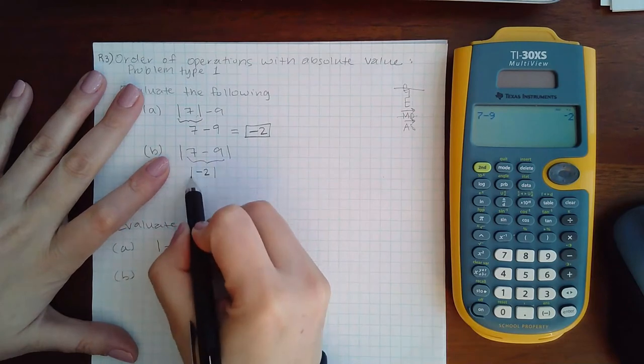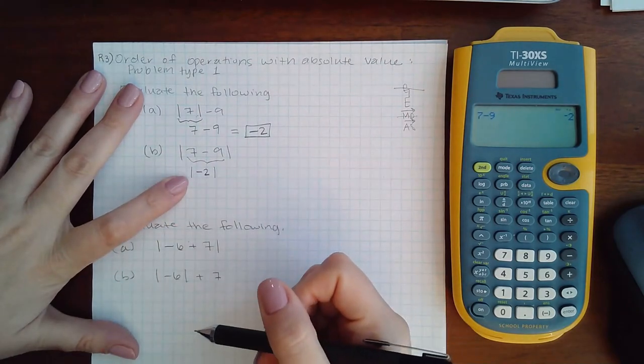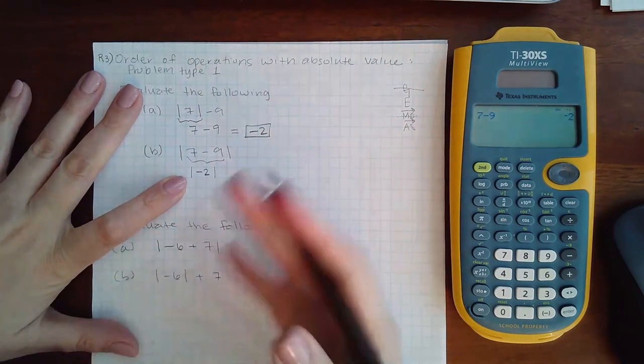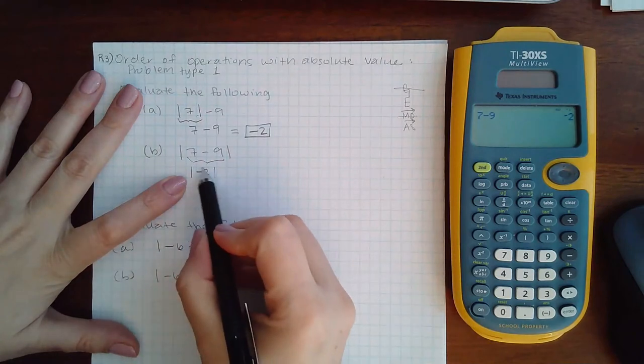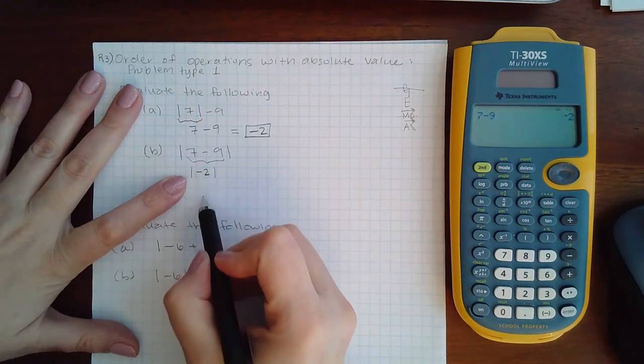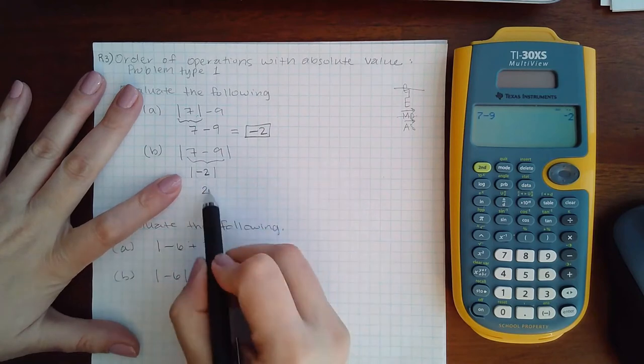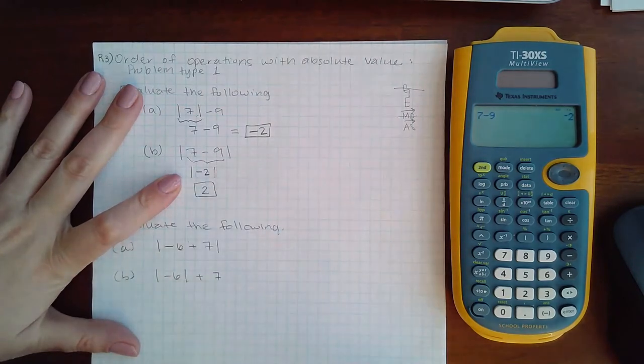However, I still have the bar around it, so when I evaluate this, remember it doesn't matter what is on the inside—it will come out as a positive. So in this case, we end up with positive two.